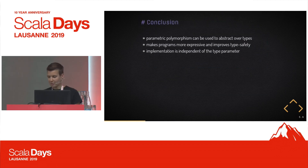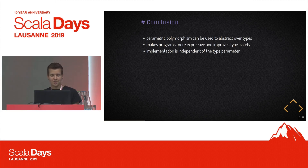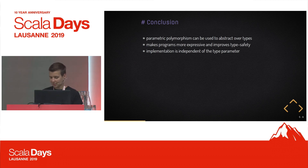To sum up parametric polymorphism: it can be used to abstract over types, providing implementations that are independent of the type, which makes programs more expressive while still maintaining type safety. The most defining characteristic compared to other types of polymorphism is that the implementation is independent of the type parameter.